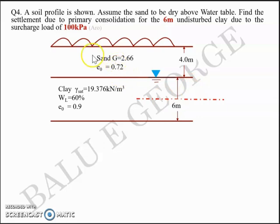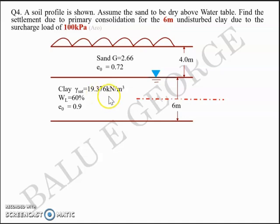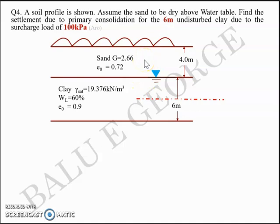You have the soil profile given. The first layer is four meter thickness and it is of sand, specific gravity 2.66, initial void ratio E₀ = 0.72. Beneath that layer you have a six meter thick clay layer whose saturated unit weight is 19.376 kilonewton per meter cube. Liquid limit is given as 60%, initial void ratio is 0.9, and the water table is at the interface between the sand and the clay layers. Above the sand layer you have a surcharge load of 100 kilopascals, so delta sigma is 100 kilopascals.